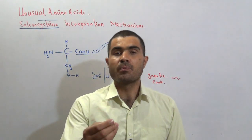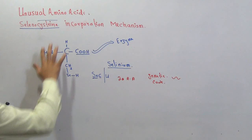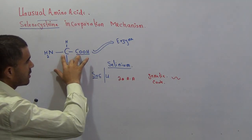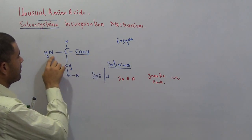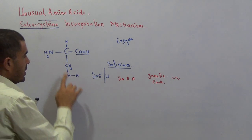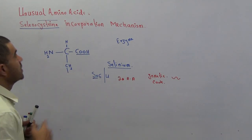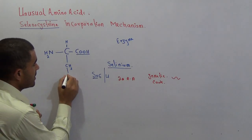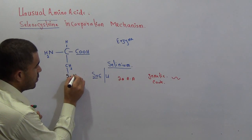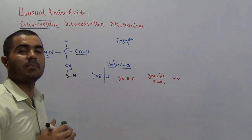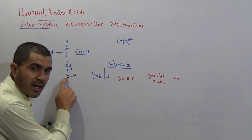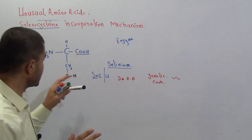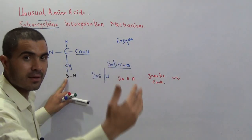First I would like to tell you the structure of these two amino acids. Here is the structure of an amino acid: we have an alpha carbon, a carboxylic group COOH, an amino group, a hydrogen, and an R group. In the case of cysteine — a very ordinary amino acid everyone knows — there is a sulfur attached with one hydrogen. So with that sulfur attached with hydrogen, the amino acid becomes cysteine. This is a sulfur-containing amino acid.